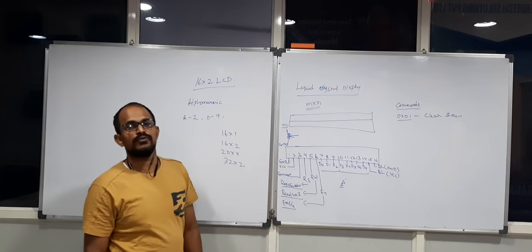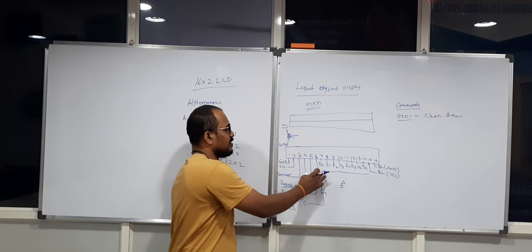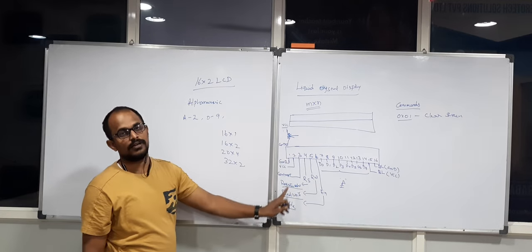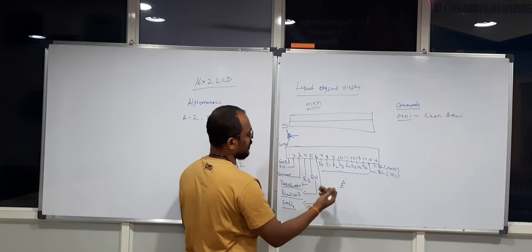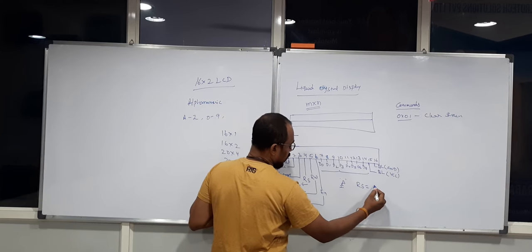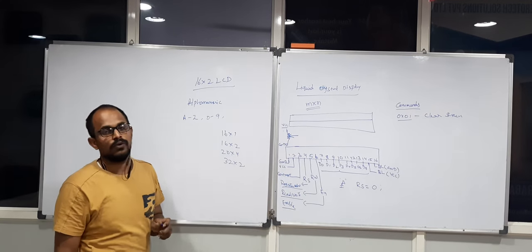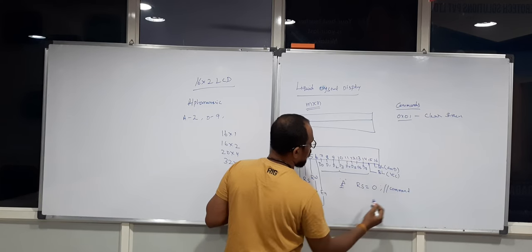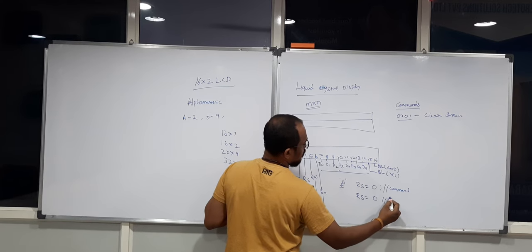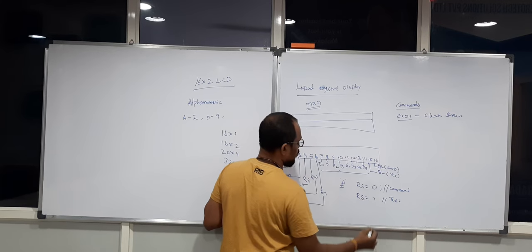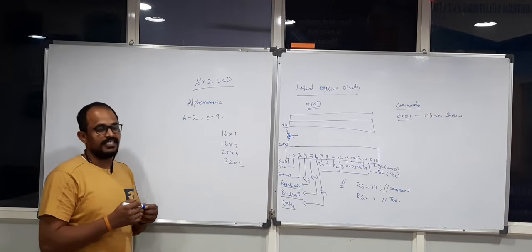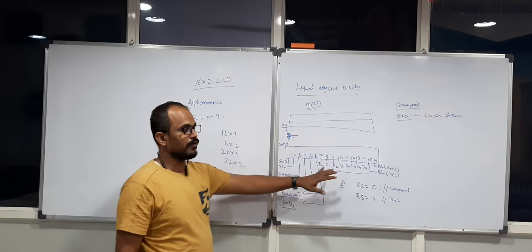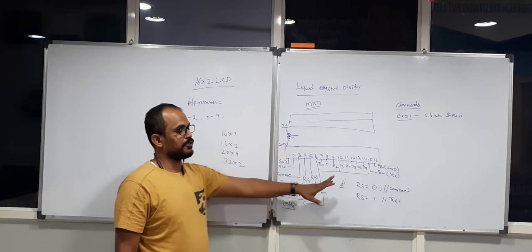The same data lines are used for sending text as well, so how does the LCD understand whether you are sending command values or text? That is decided by the RS control pin. Whenever you are trying to send commands to the LCD, you should keep RS at logic 0. If you are trying to send text or numbers to the LCD, you need to make RS logic 1. With the RS logic, the LCD understands whether you are sending commands or text.